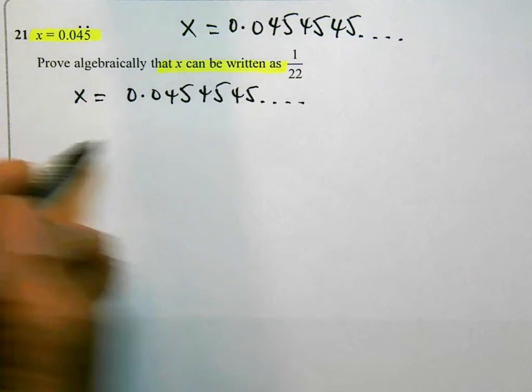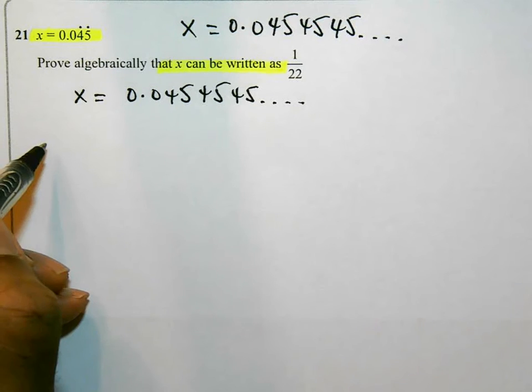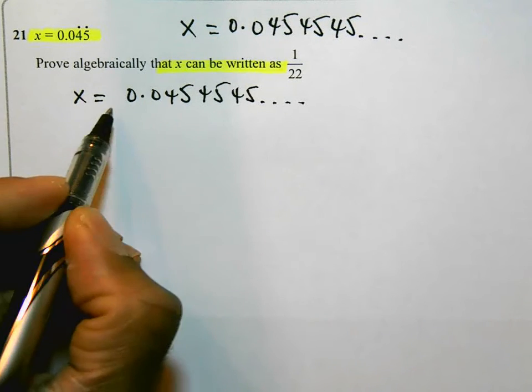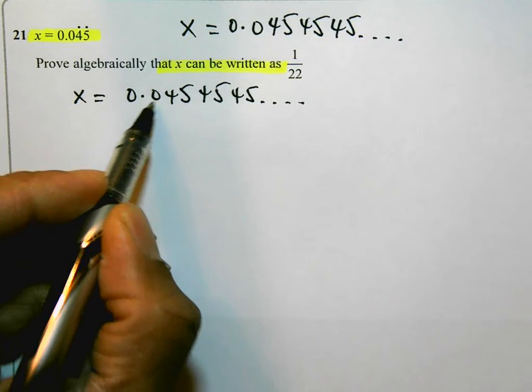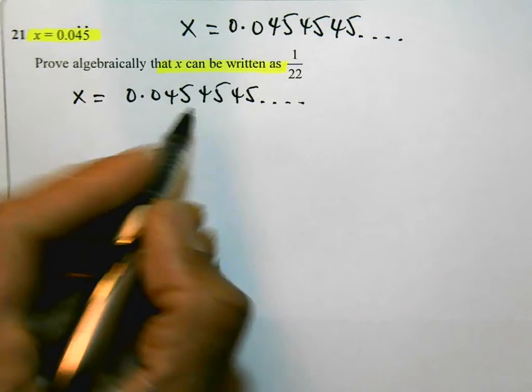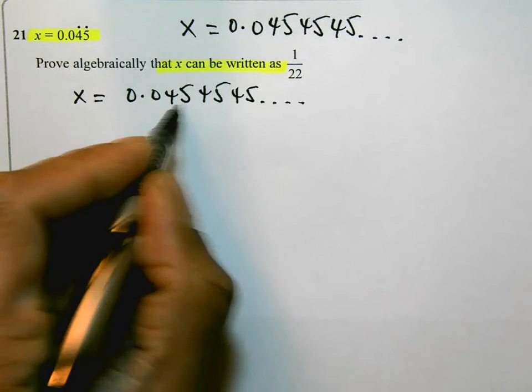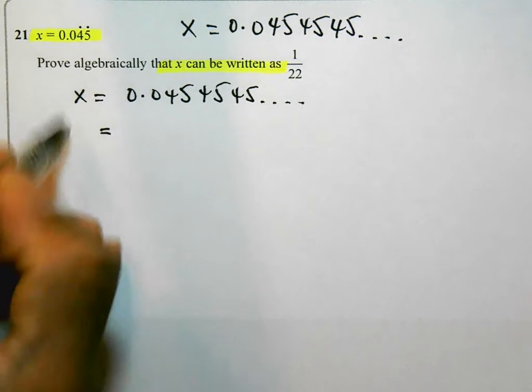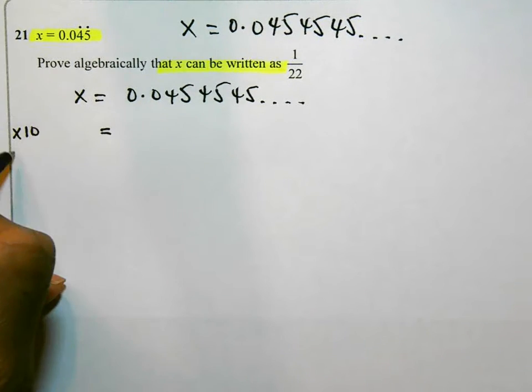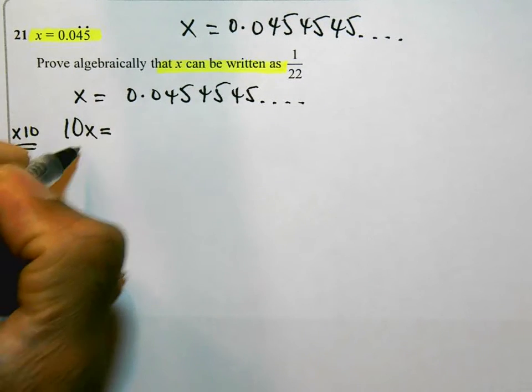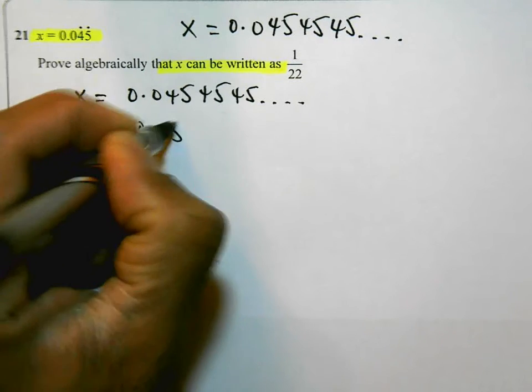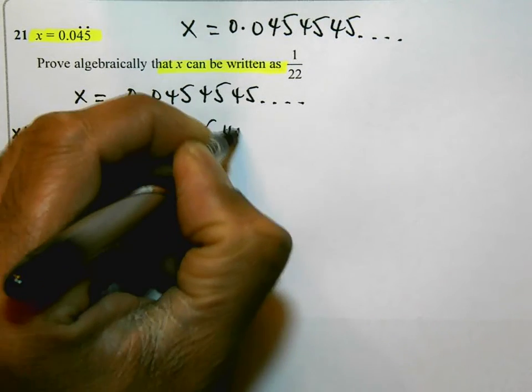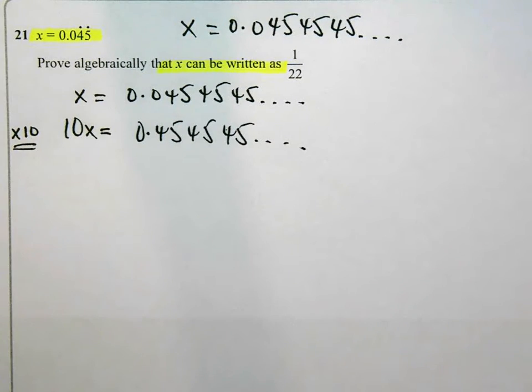Now there is a standard technique when you're doing this type of question. What I'm going to do is I'm going to first of all times by 10 both sides, so I can get rid of that 0 and bring the 45 up. What I mean by that is if I times by 10, I'll get 10x. Times this by 10, I'll get 0.454545 and so on. Now that is going to help me in a bit.